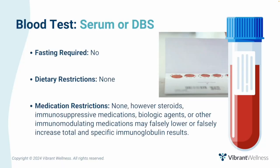The Vibrant Lyme Autoimmunity Panel is a blood test that can be collected via venipuncture or dried blood spot. Fasting is not required, and there are no dietary or medication restrictions. However, as with all antibody testing, patients taking steroids, immunosuppressive medications, biologic agents, or other immunomodulating medications may have falsely lower or falsely increased total and specific immunoglobulin results.